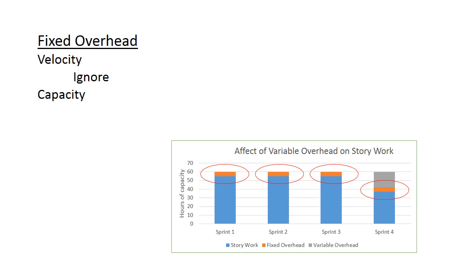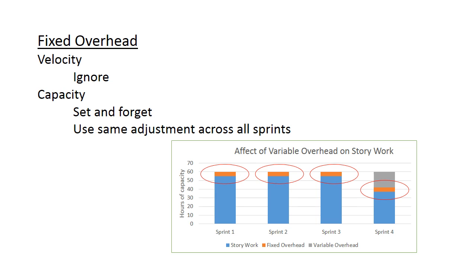For capacity, I recommend you initially adjust your capacity hours for these fixed overhead items, and then forget about it. The same adjustment will work across all sprints. If you've already set capacity at six hours of work per day per programmer, then you might just ignore the effects that fixed overhead have on capacity. I recommend you do not create stories and do not create tasks for any of the fixed overhead work — it's simply a waste of time, as it's already accounted for in the capacity.